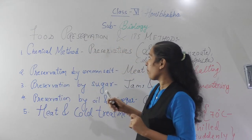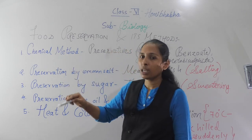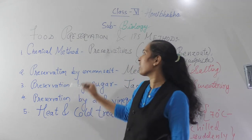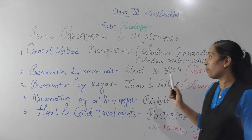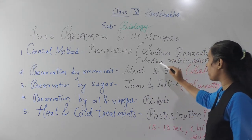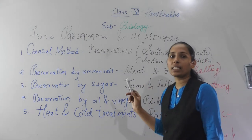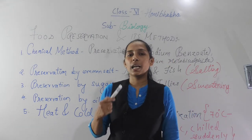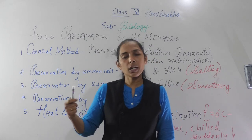So let's see which are the chemical preservatives. First we will discuss about the chemical method — because in that we are adding some chemicals as preservatives. The chemicals we are adding as preservatives are sodium benzoate and sodium metabisulphite. These two chemicals act as chemical preservatives and help to keep the food material for a long period of time.